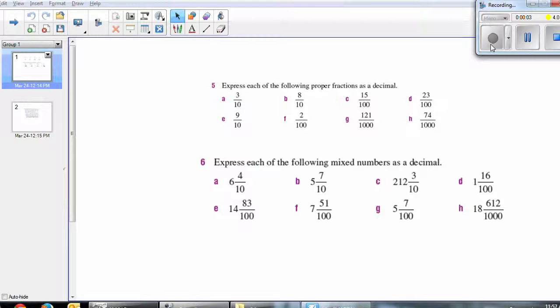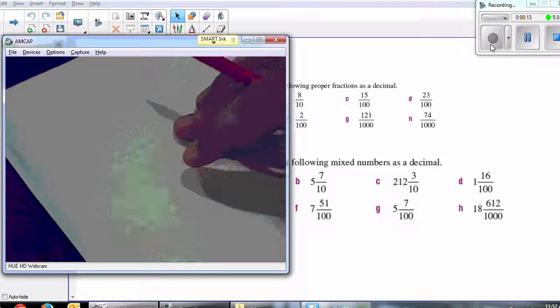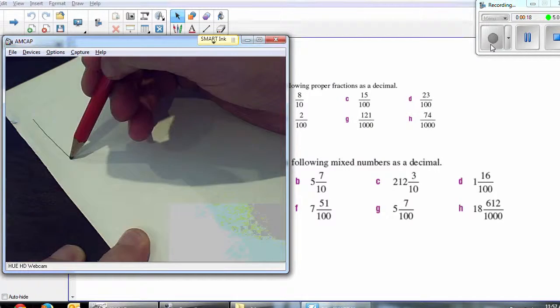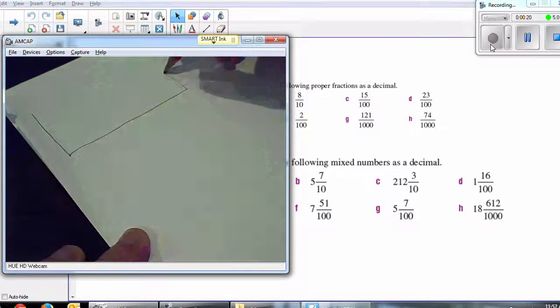We're looking at decimals, and decimals are really quite simple once you get your head around it. If you don't really understand decimals, the first thing you should do is get yourself a place value chart. They're very easy to get because you can just draw them up yourself.